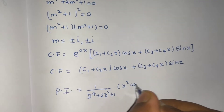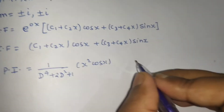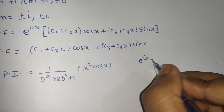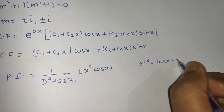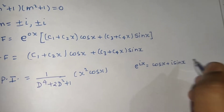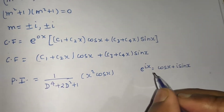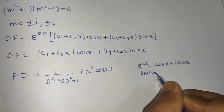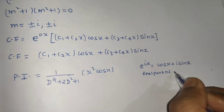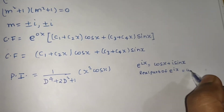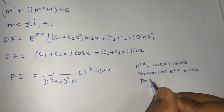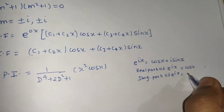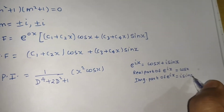We know that e^(ix) = cos x + i·sin x. So the real part of e^(ix) is cos x, and the imaginary part of e^(ix) is i·sin x.